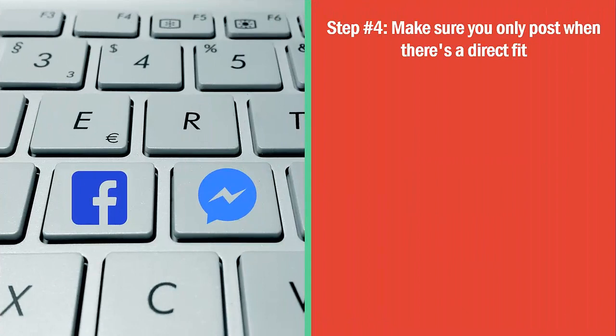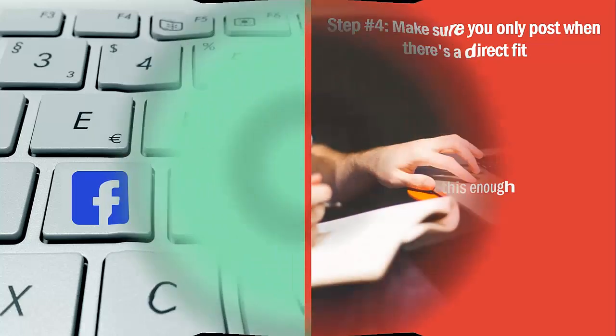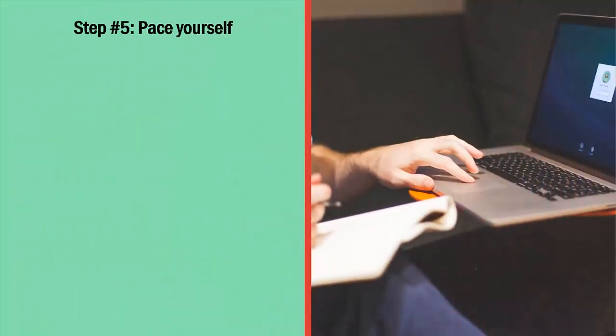Step number four: make sure you only post when there's a direct fit. I can't repeat this enough — you must only post comments on a blog post that directly fits your niche. There also has to be a natural progression from your level one content to whatever content you're commenting on.